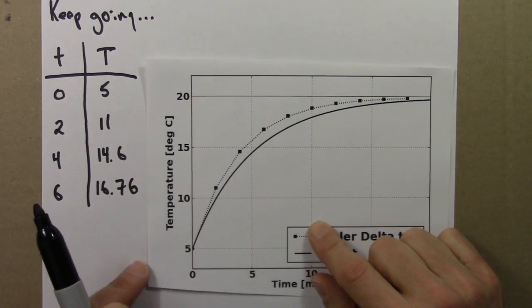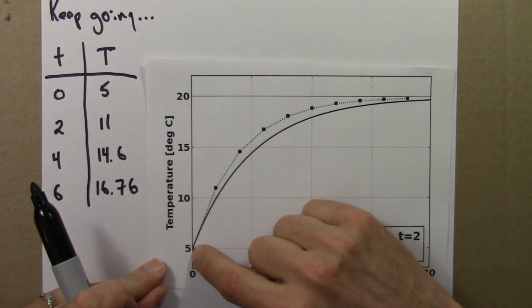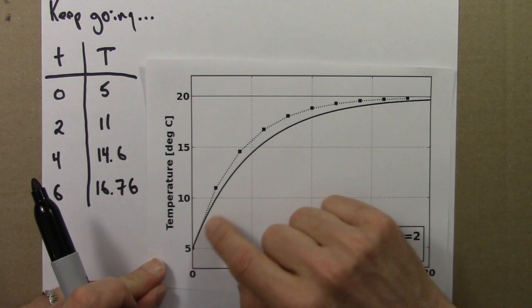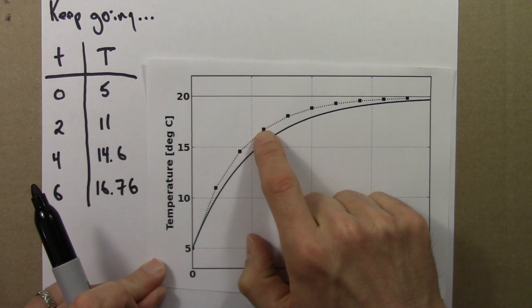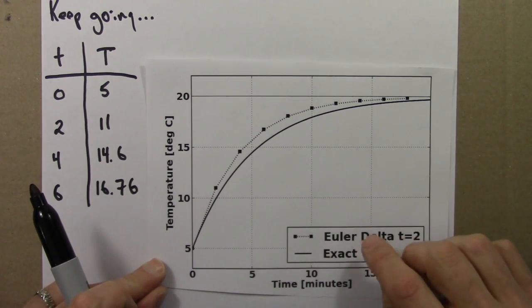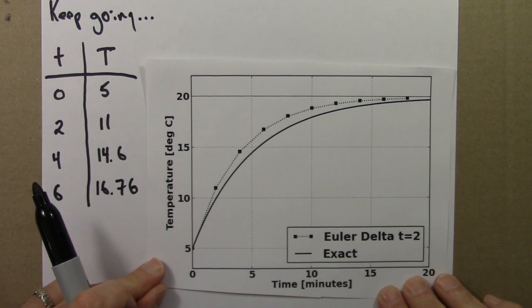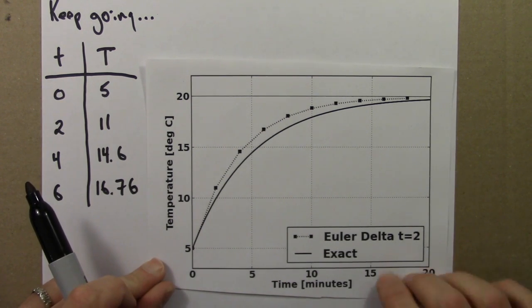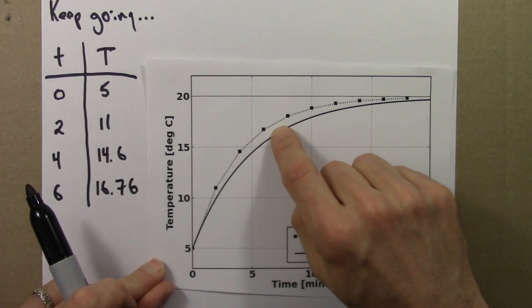The Euler solution, that's what we're doing here, are these squares. So we start at the initial condition, and then here is 11, a little bit less than 15, almost 17, and so on. So we can see that the Euler solution, the squares connected by the dotted line, is not that close to the exact solution. It's not that bad, but it's not a perfect match.